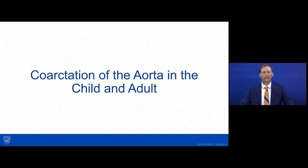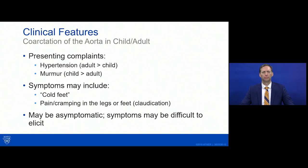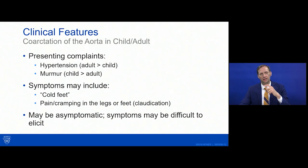In adults, the most common presenting complaint is hypertension that's difficult to treat or chronic without good explanation. In children, a murmur is more commonly heard, often best between the scapulae because it's the descending aorta posteriorly. Other symptoms may include cold feet or claudication — pain or cramping in the legs and calves, particularly with exertion. Many patients are asymptomatic.